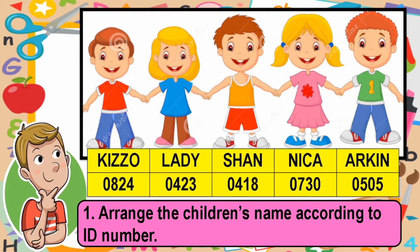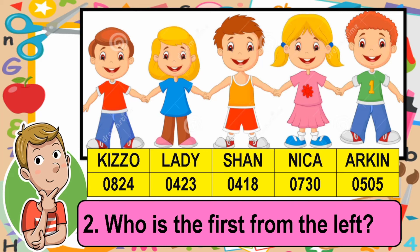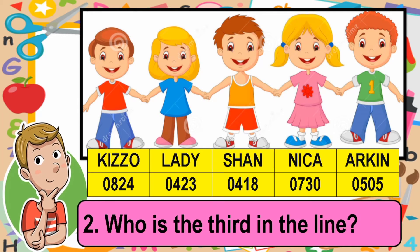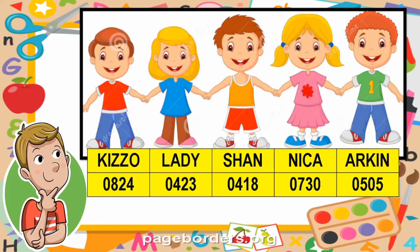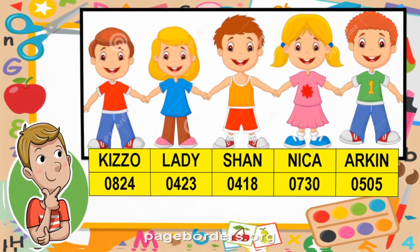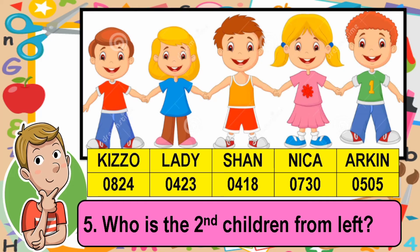First question: arrange the children's names according to ID number, from greatest to least. Second question: who is the first from the left? Third question: who is the third in the line? Fourth question: who is the fourth child from the right? And fifth question: who is the second child from the left?